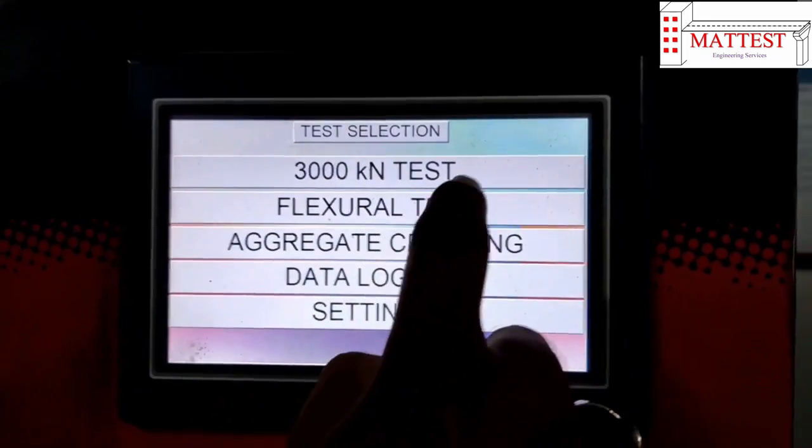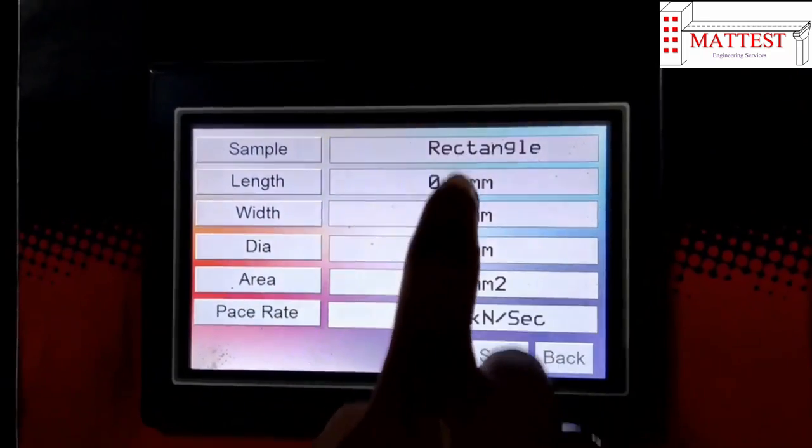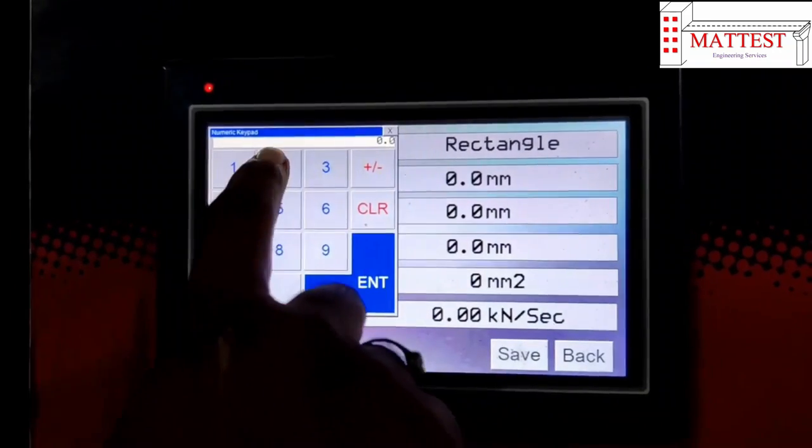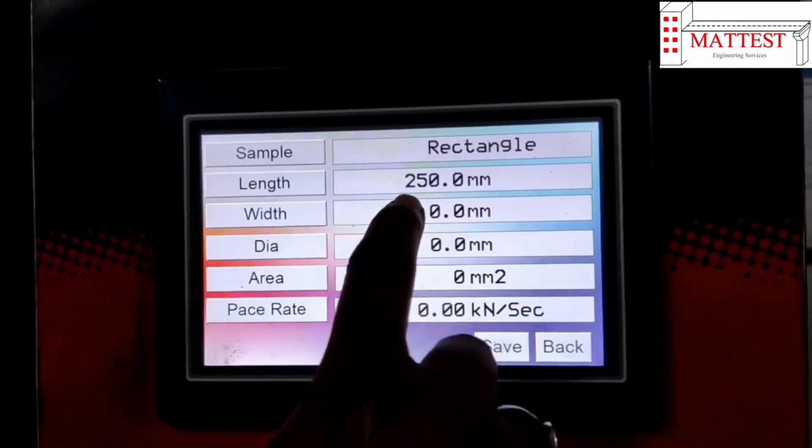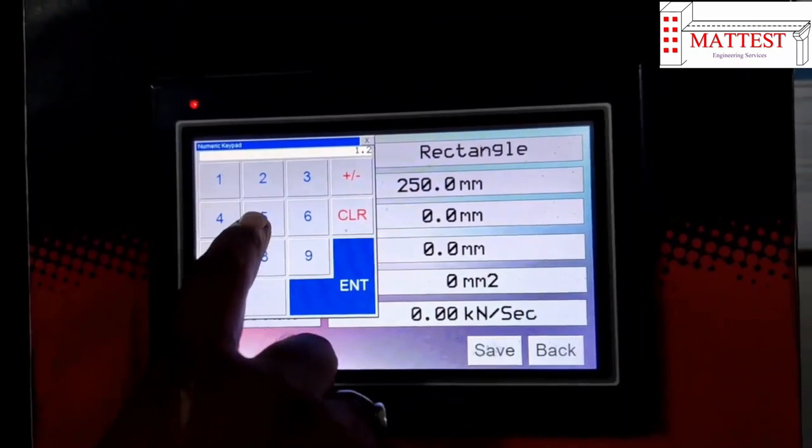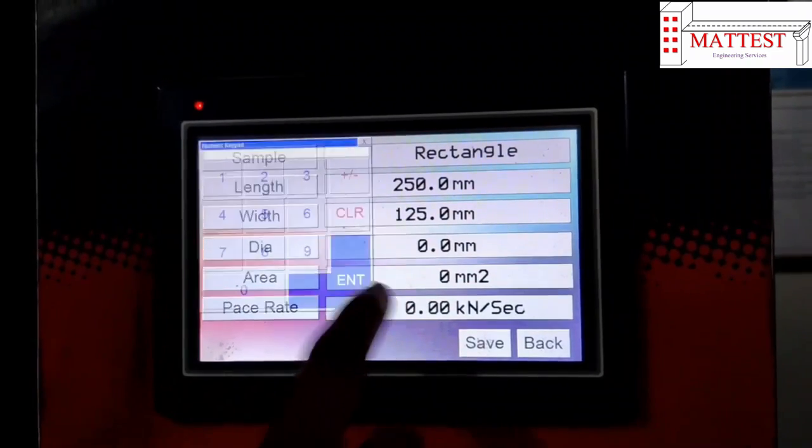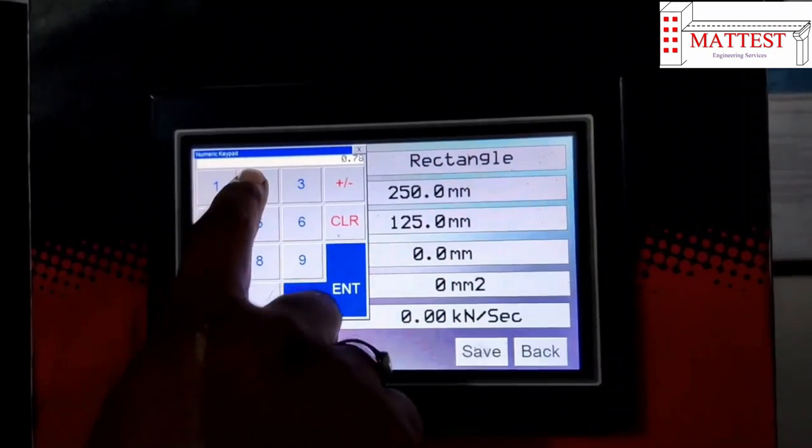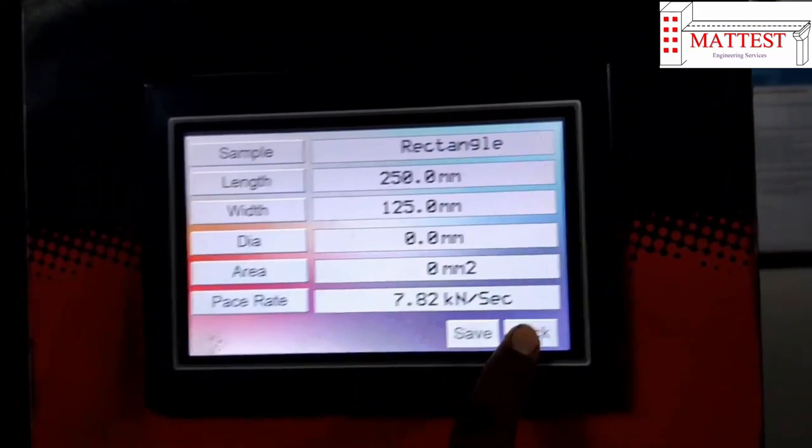Step 2: Set up the compression testing machine as per the width and length of the specimen. Load shall be applied at 7.82 kN per second.